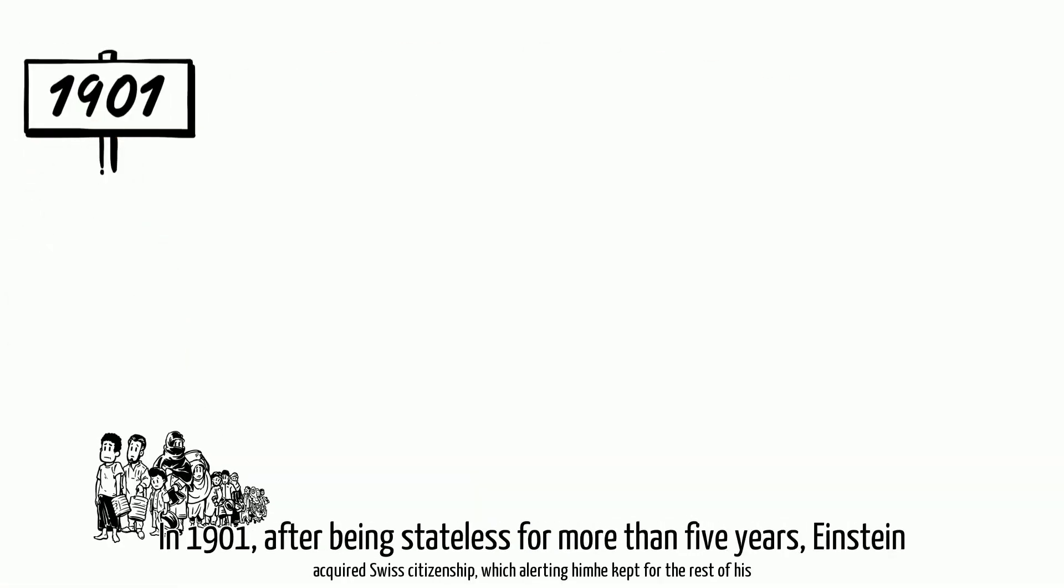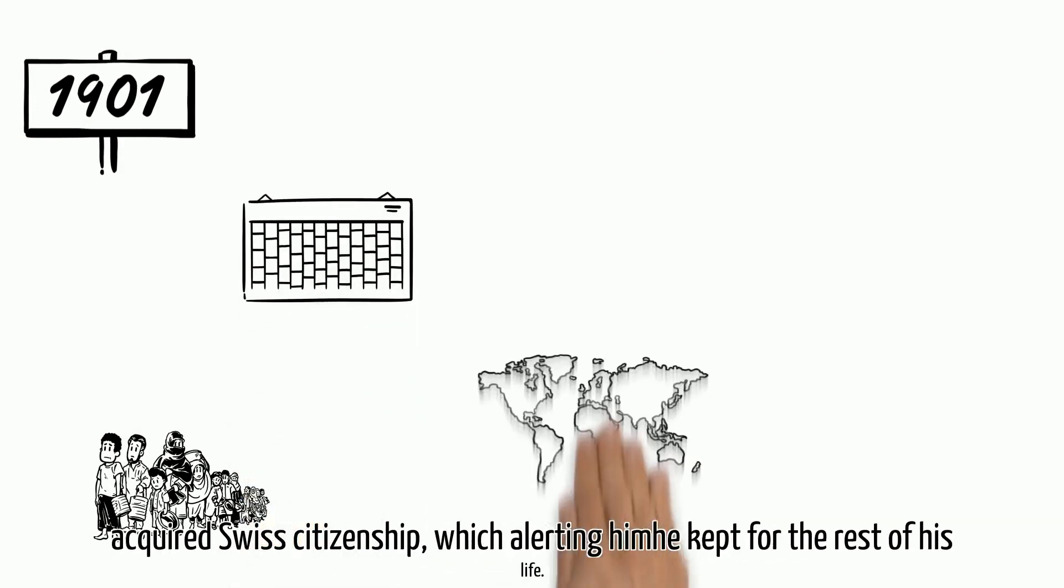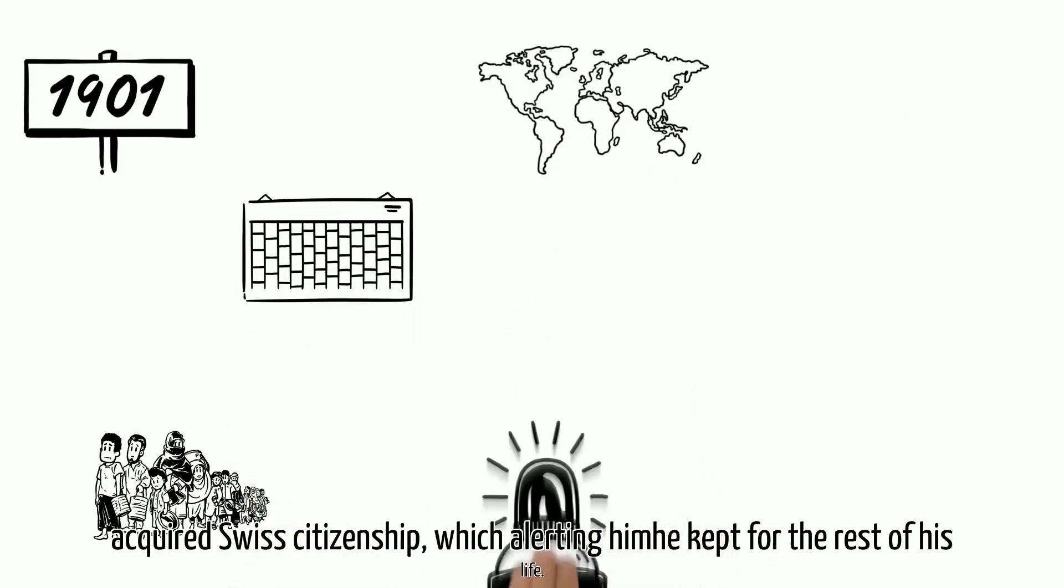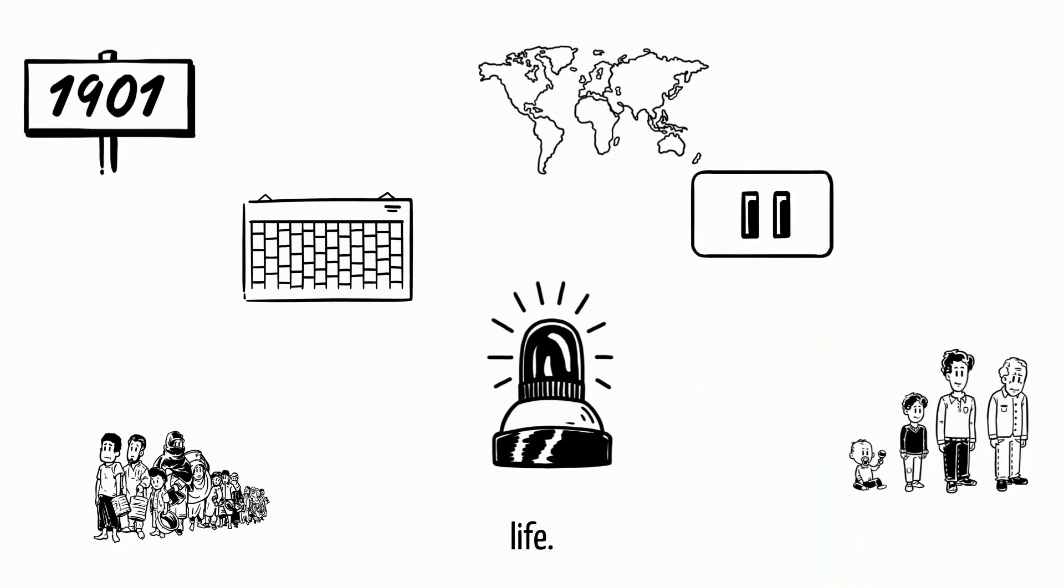In 1901, after being stateless for more than five years, Einstein acquired Swiss citizenship, which he kept for the rest of his life.